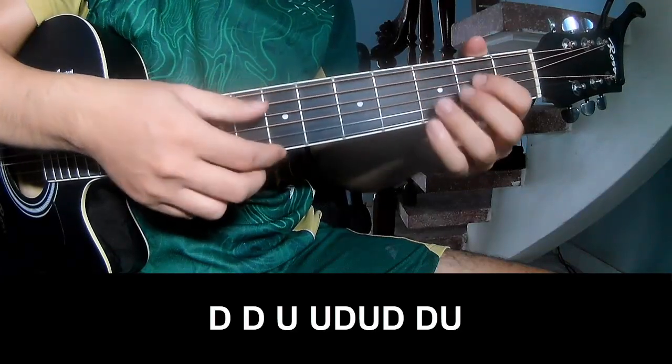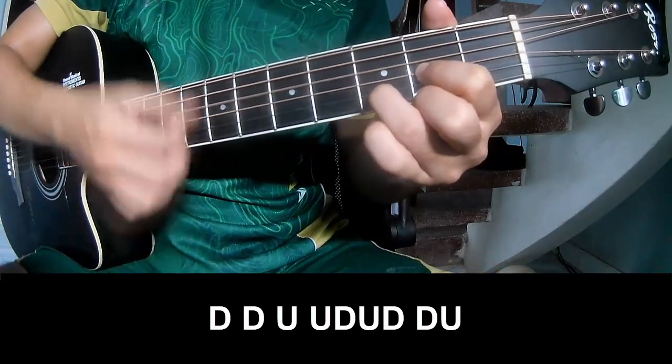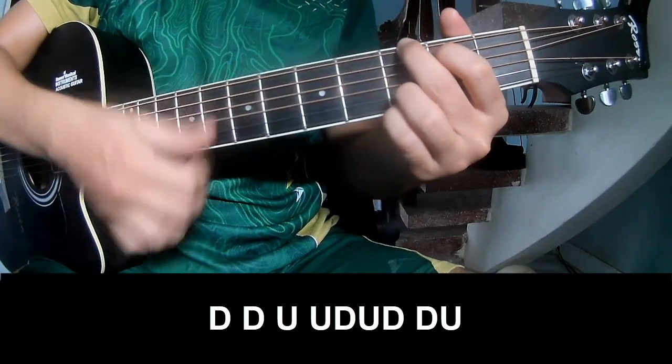For the chorus, the strumming pattern is down, down, up, up, down, up, down, down, up, down, down, up, up, down, down, up, down, down.